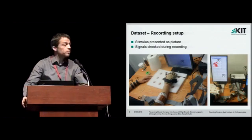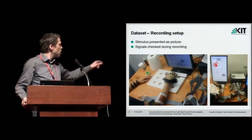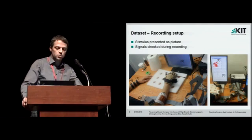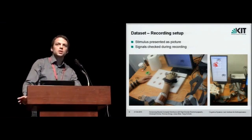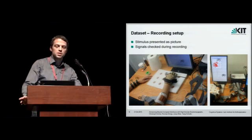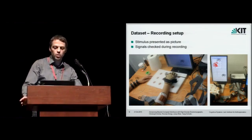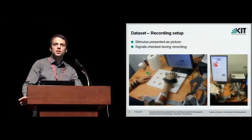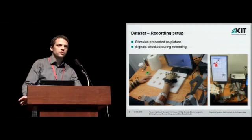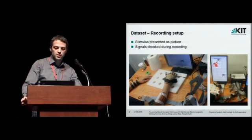Here you see our setup. Number one is the array which is fixed with some straps to the forearm. The subject is sitting in front of a screen. He gets the stimulus, what kind of movement he needs to do in a graphical way. And in parallel we look at the signals and make sure that there are not too many artifacts or other distortions in there.